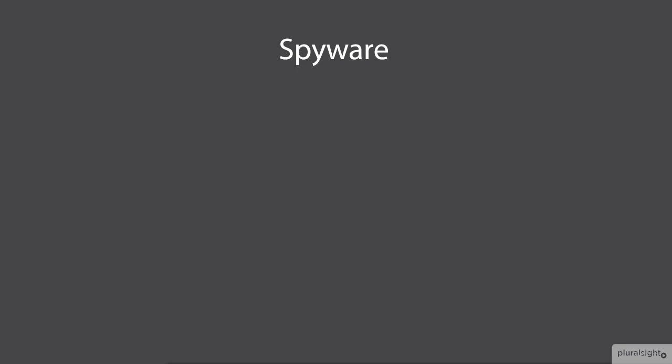When you download a free product, typically the manufacturer wants to know how you're running that product, or maybe they're going to make money. Last time I installed Java, during the installation, if I hadn't hit the advanced button, I would have also installed some additional toolbars and software that Oracle gets paid for. Last time I checked, I didn't think Oracle was hurting for money.